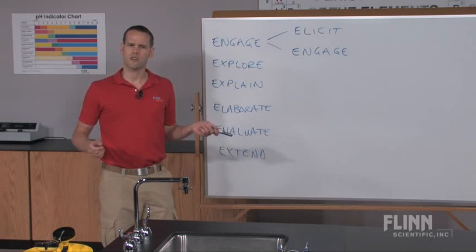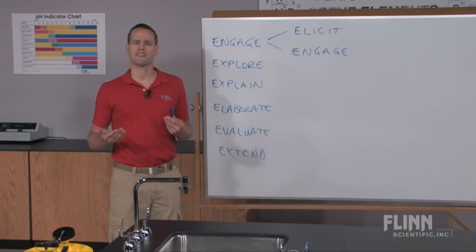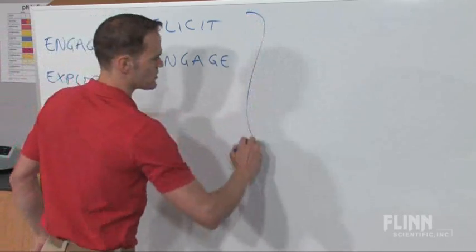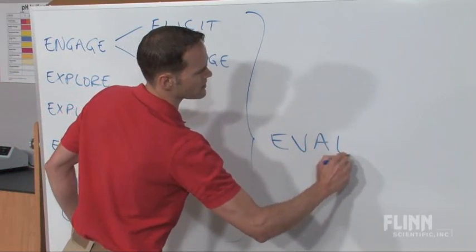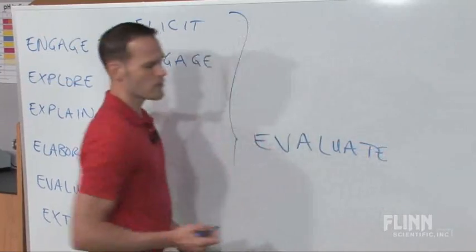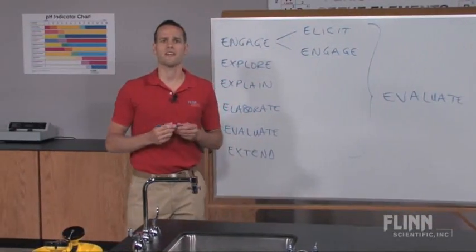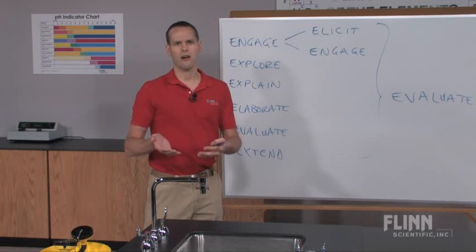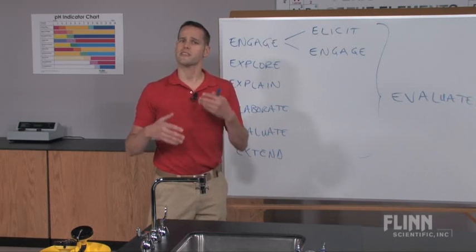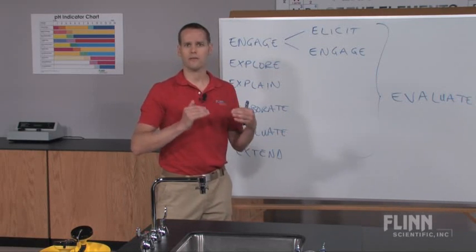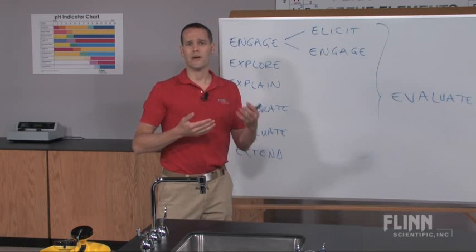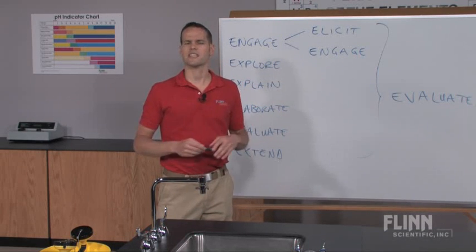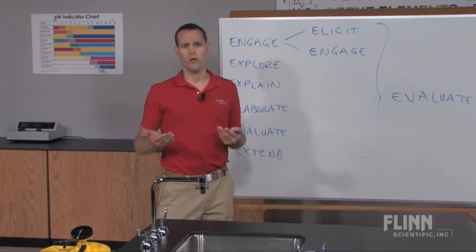The authors of the 7E model also noted that evaluation doesn't just happen at the end — it runs throughout the entire cycle. At every step of the learning cycle, you're evaluating what students know: assessing prior knowledge, evaluating procedure design, and questioning during explanations. Your informal and formative assessments are evaluating student knowledge all the time.